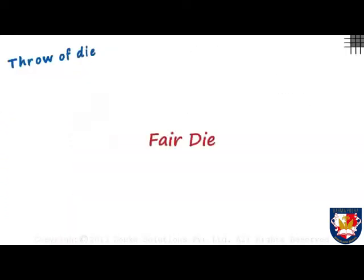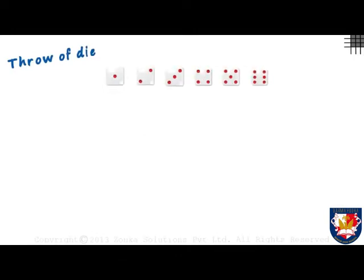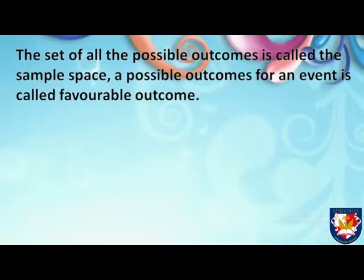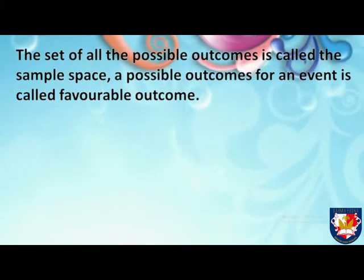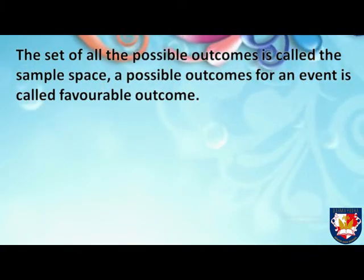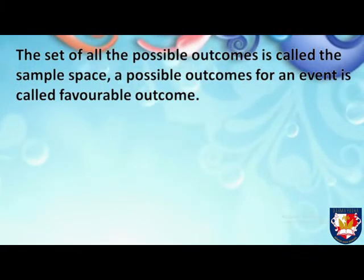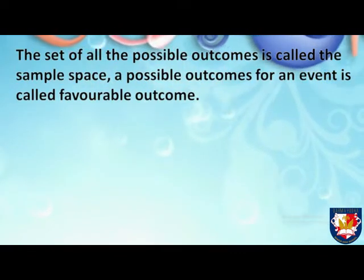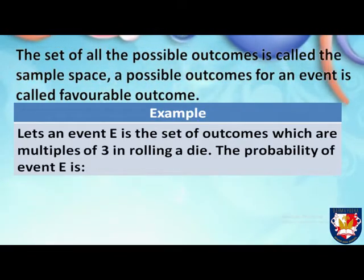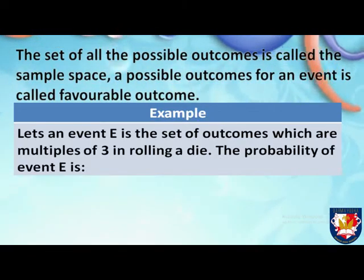Assume a fair die is thrown. Let's think of all possible outcomes — you may get one, two, three, four, five, or six. These are the only possible outcomes for a thrown die. The set of all possible outcomes is called the sample space. A possible outcome for an event is called a favorable outcome.